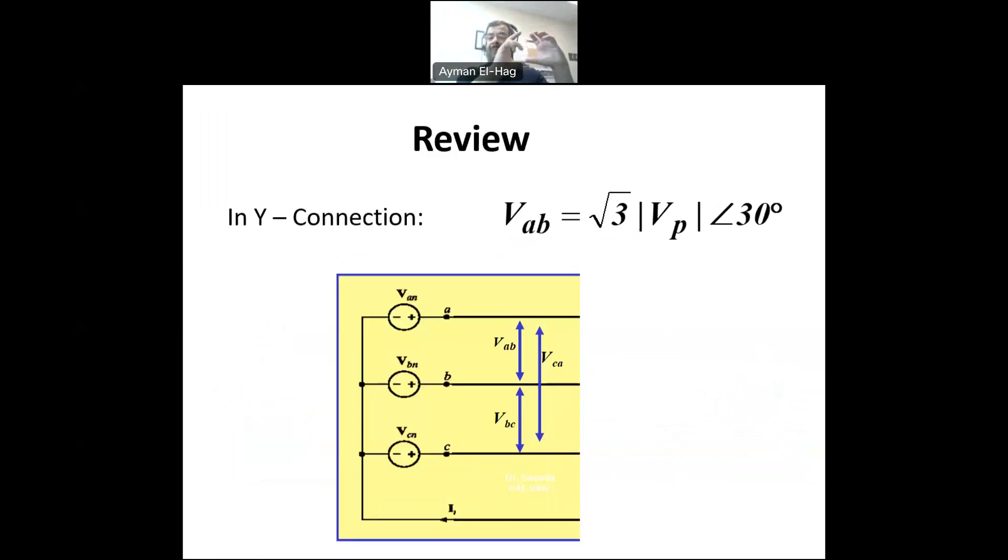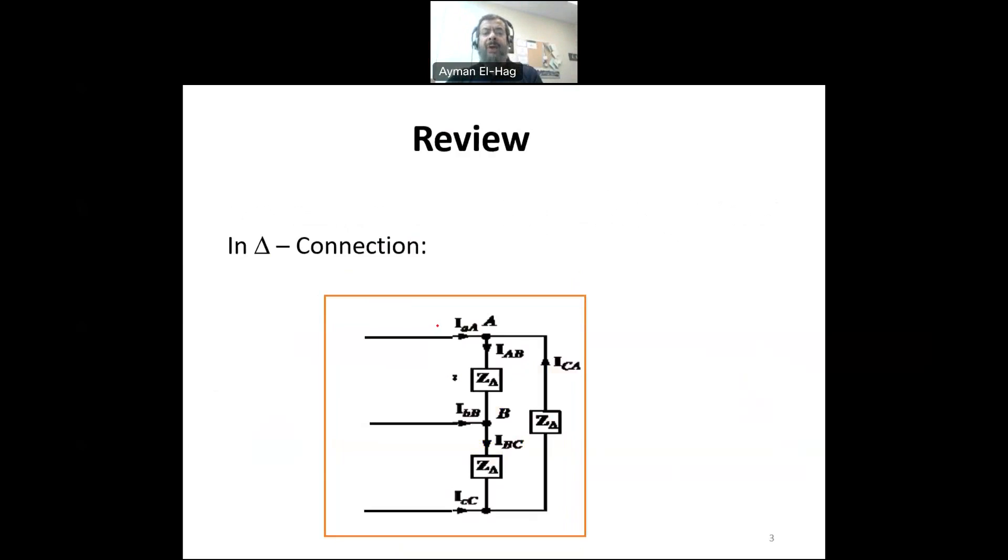So if you have a Y connection, this is the relation between the line-to-line quantity and the phase quantity. If you have a delta connection, then the line current is equal to root 3 times the phase current, but here minus 30 degrees. These two formulas are very important and we need to use them.